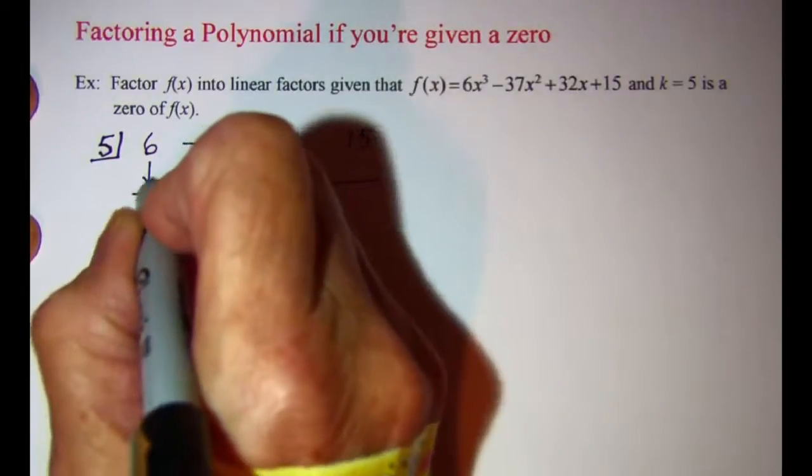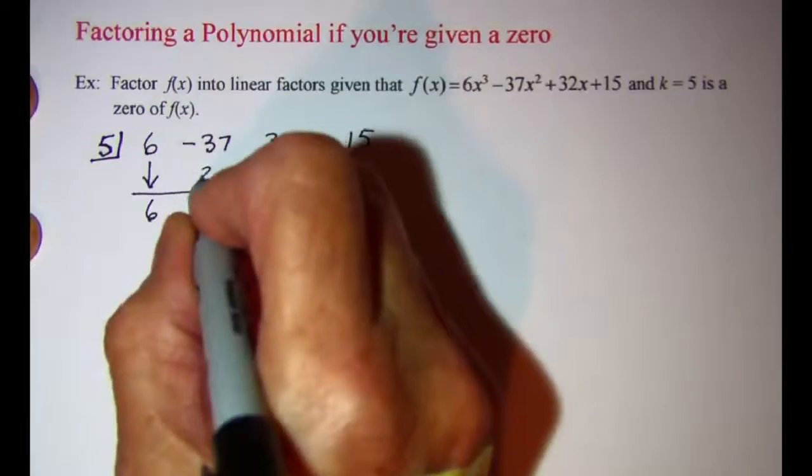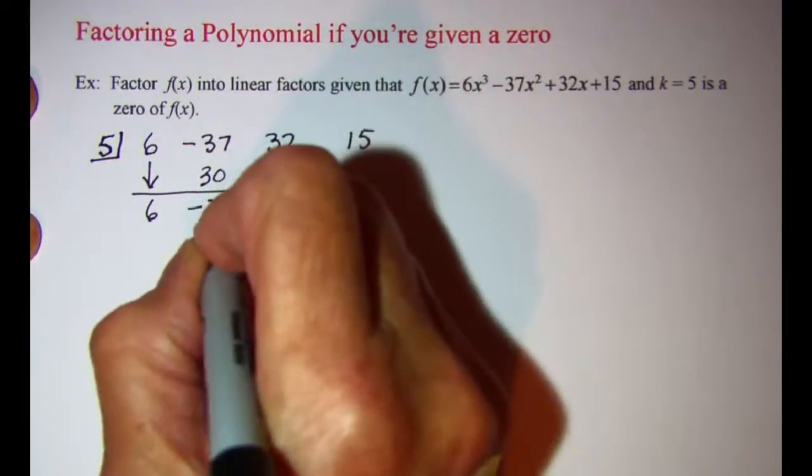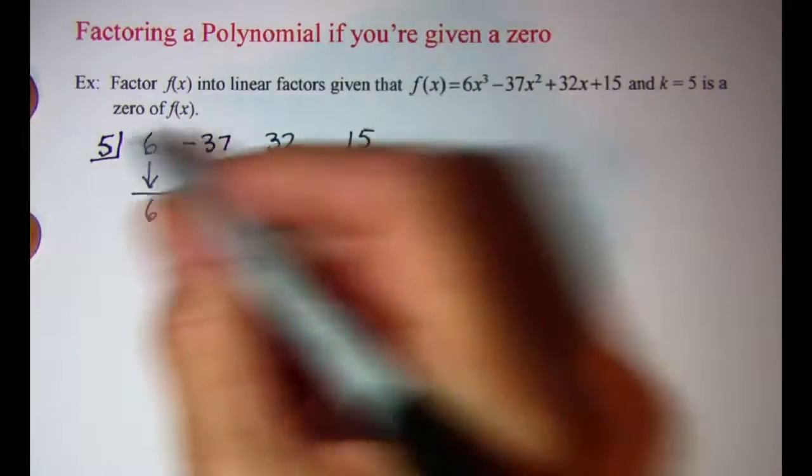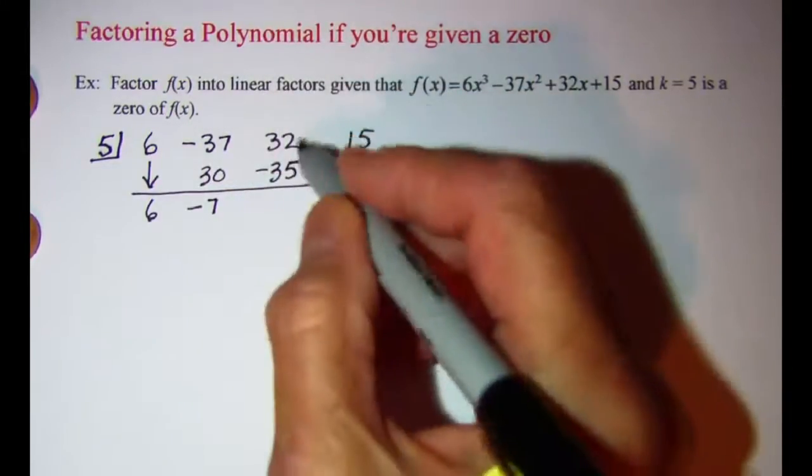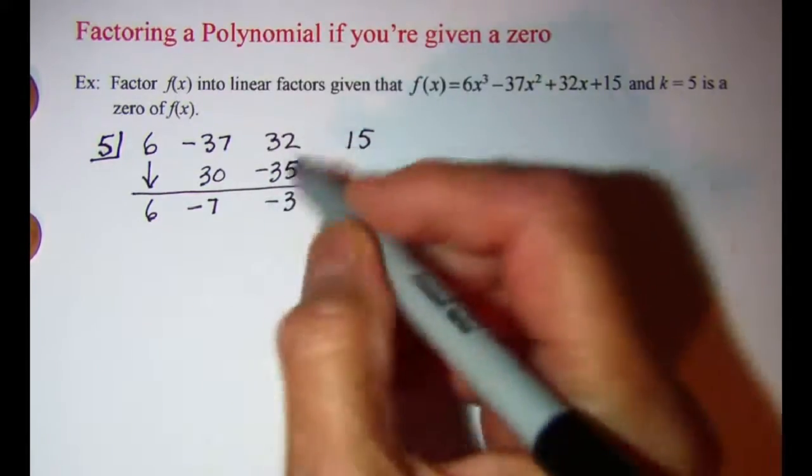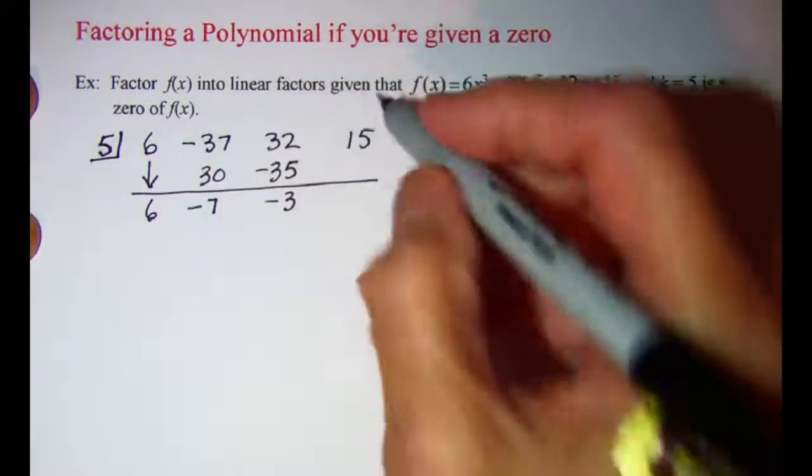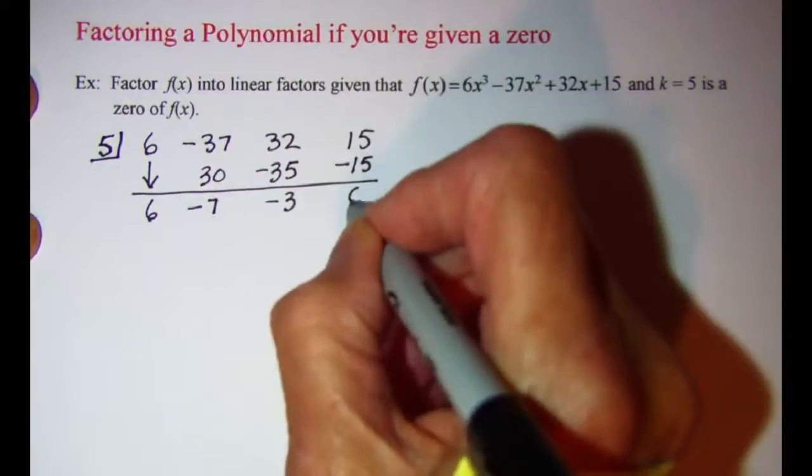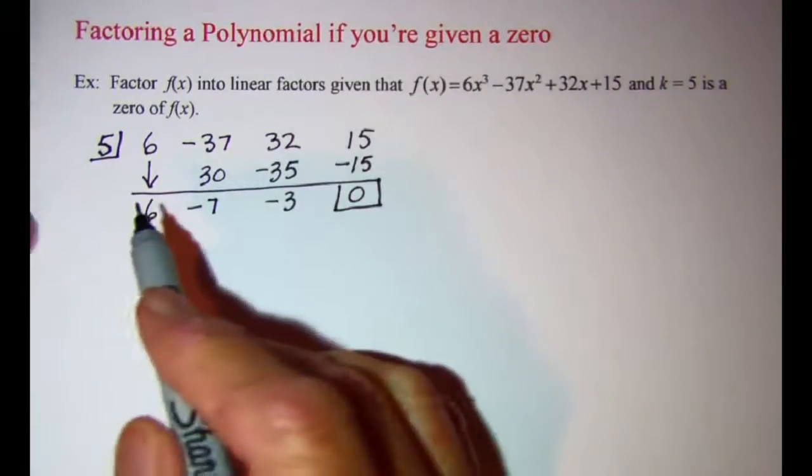Bring down my first number. 6 times 5 is 30. Add these together I get negative 7. Multiply negative 7 times 5 is negative 35. Add 32 and negative 35, I'll get negative 3. And negative 3 times 5 is negative 15. When I add these together I get 0, which is what I expected since they told me that 5 was a zero.